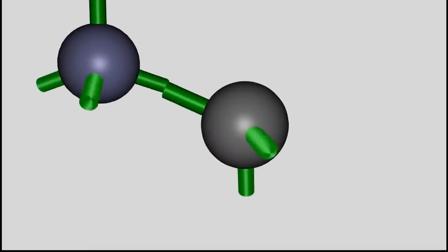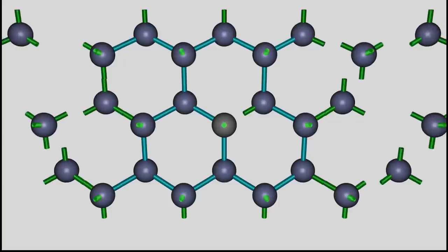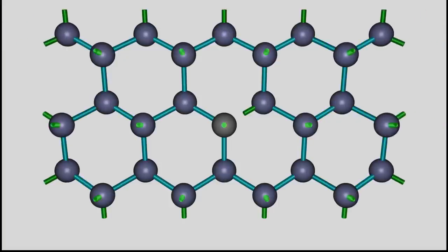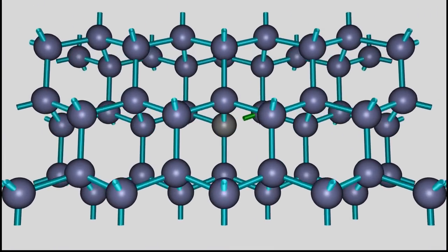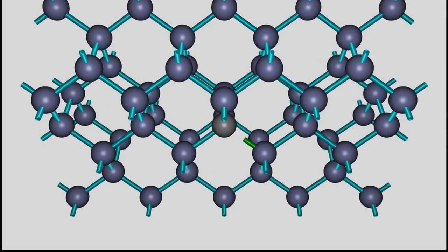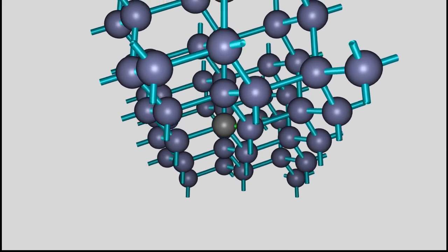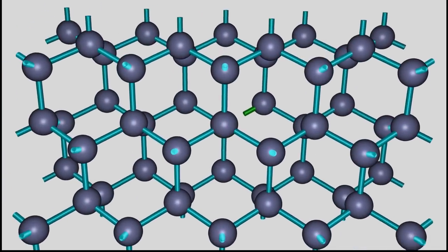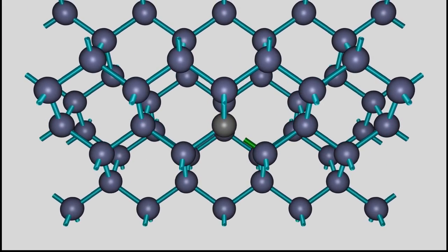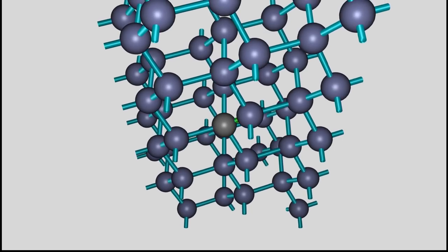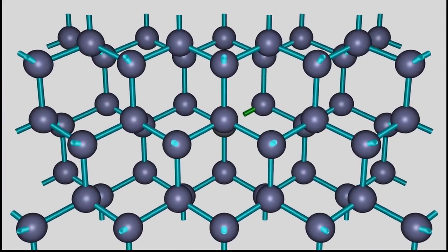Let's insert the aluminum atom into the crystal lattice of silicon. As you can see, all three valence electrons of the aluminum atom form covalent bonds with the silicon atoms next to it. Because of the fact that silicon atoms have four valence electrons, the bond with the fourth electron of one silicon atom remains unsatisfied. This absence of an electron in a covalent bond is called an electron hole.